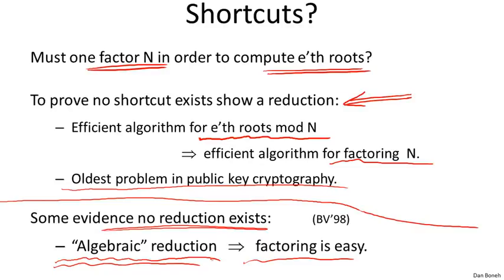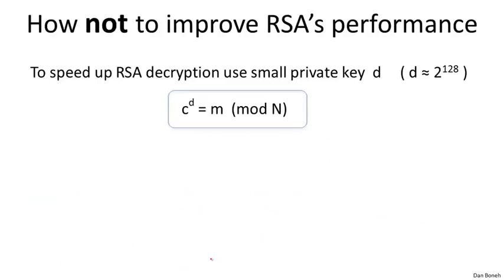As far as we know, RSA is a one-way function, and in fact breaking RSA — computing these e-th roots — actually requires factoring the modulus. We all believe that's true, and that's the state of the art. But now there's been a lot of work on trying to improve the performance of RSA encryption or decryption, and it turns out there's been a number of false starts. I want to show you this wonderful example as a warning of how not to improve the performance of RSA.